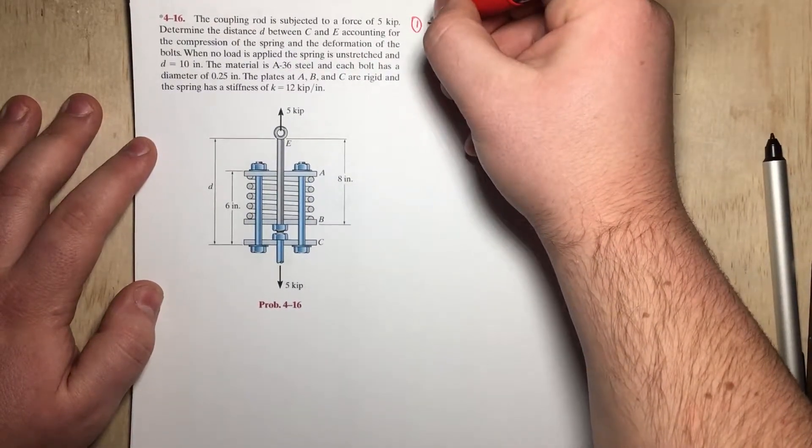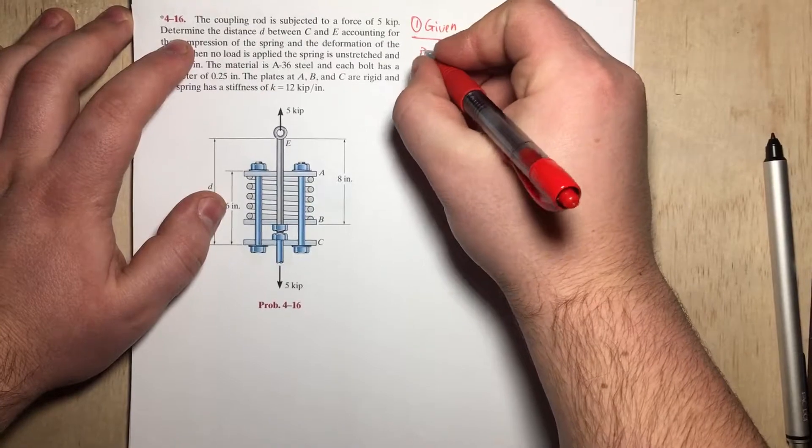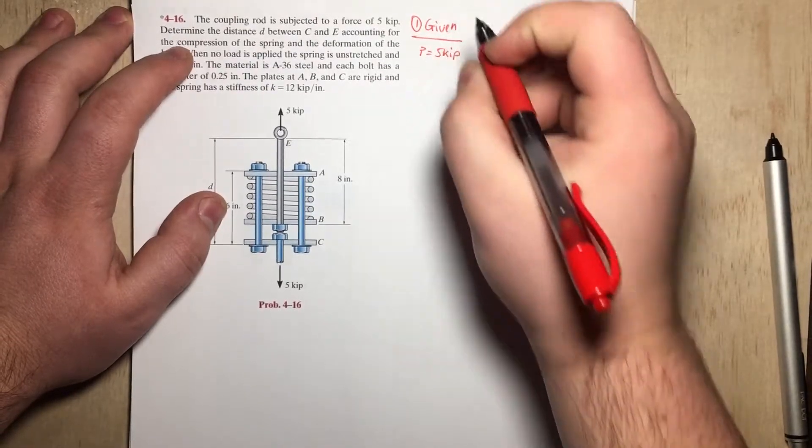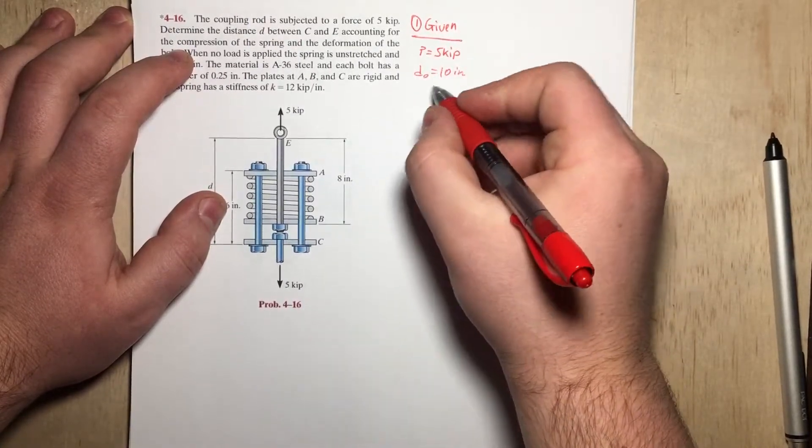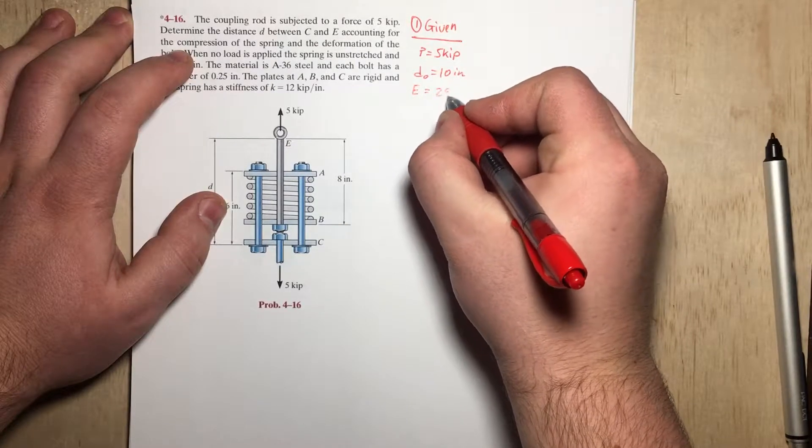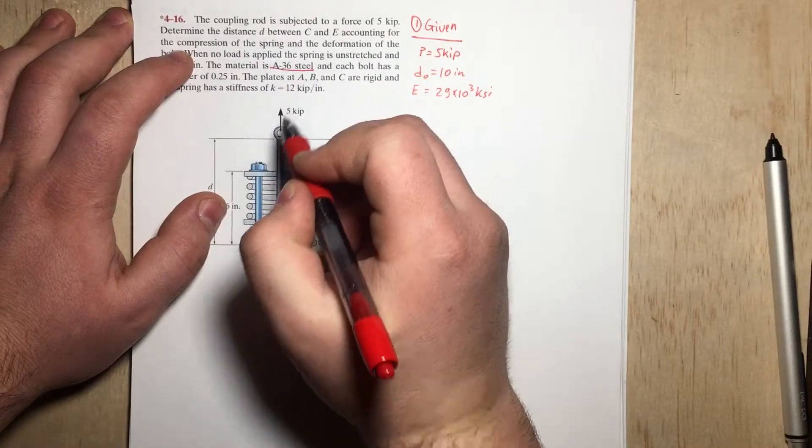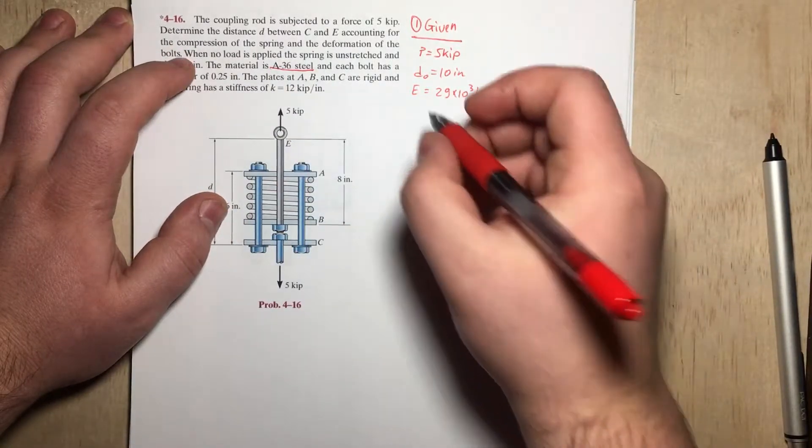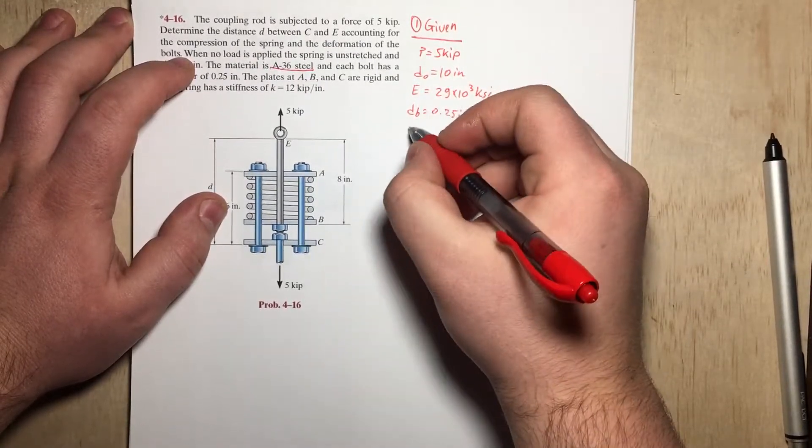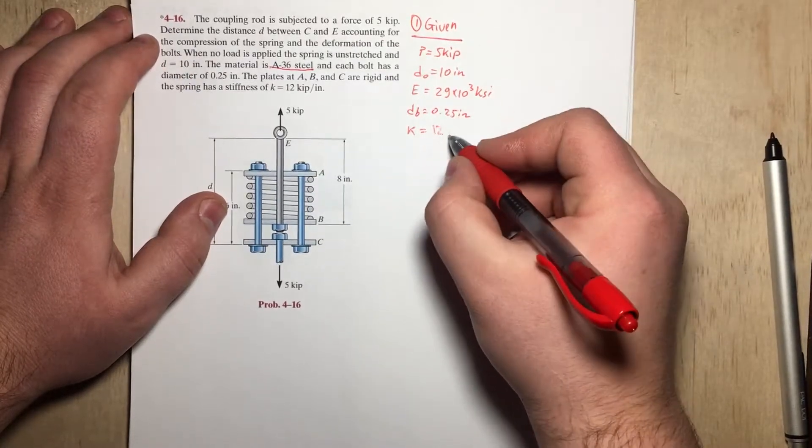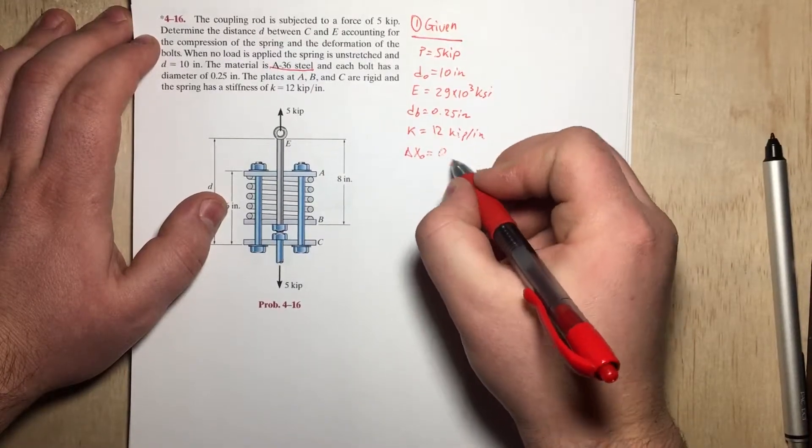So as always, we need to start with what is given. We're given that P is 5 kip. We know that d0 is 10 inches. We also know that E is 29 times 10 to the third ksi, because it's A36 steel. We also know that the diameter of the bolt is 0.25 inches, and the stiffness of the spring, which is 12 kip per inch. And we also have delta x initially, which is 0 inches.